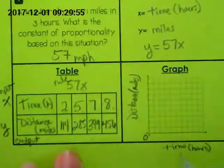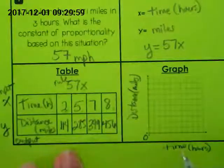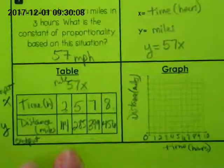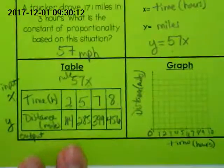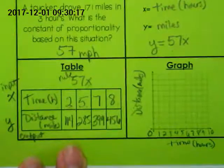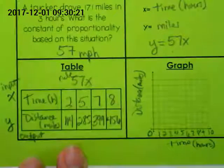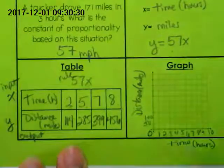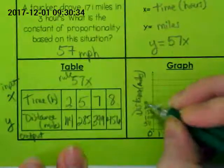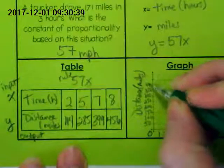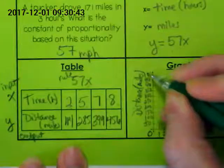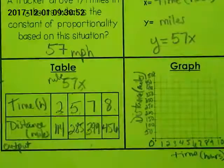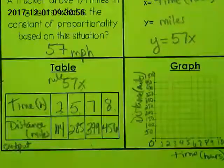You always want to look at your graph and say, am I going to have to count by twos or tens or something? I think in this case we can just go zero, one, two, three, four. So let's label that. I went all the way up to ten. You don't need to. You could stop at eight. The distance goes up to 456 miles. I think we should probably do that by fifties. So we're going to start here at zero. The first line has to be 50, 100, and just keep going by fifties.